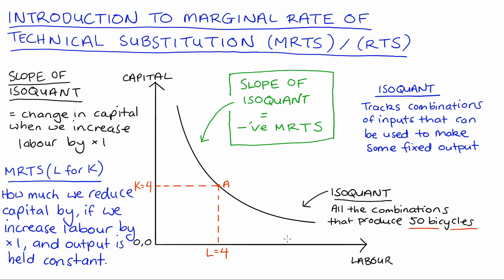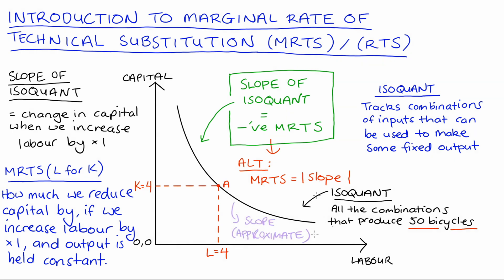The only difference is that the slope will be negative because we have a downward-sloping isoquant curve, but our MRTS is always reported as a positive value. So the slope equals the negative of our MRTS, or equivalently, our MRTS equals the absolute value of the slope of our isoquant. This means that to find our MRTS we can just find the slope of our isoquant and take the absolute value.